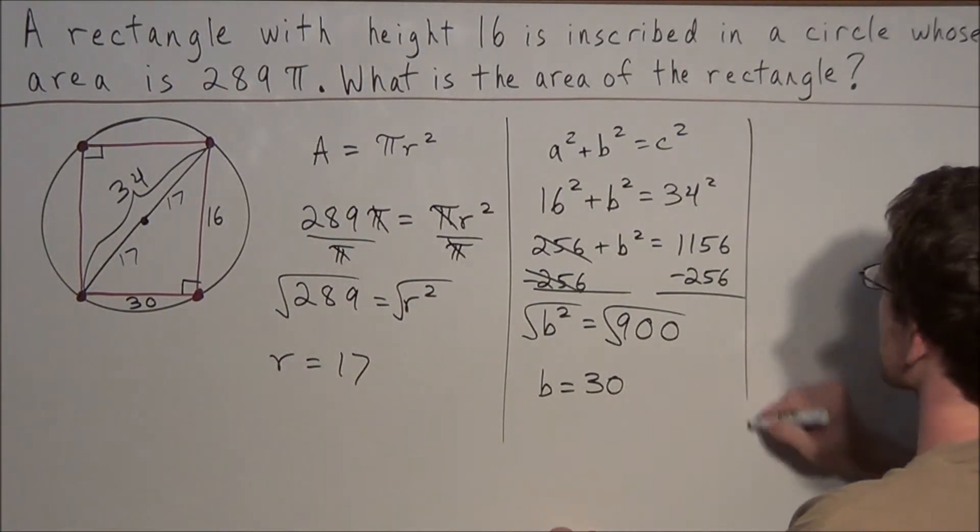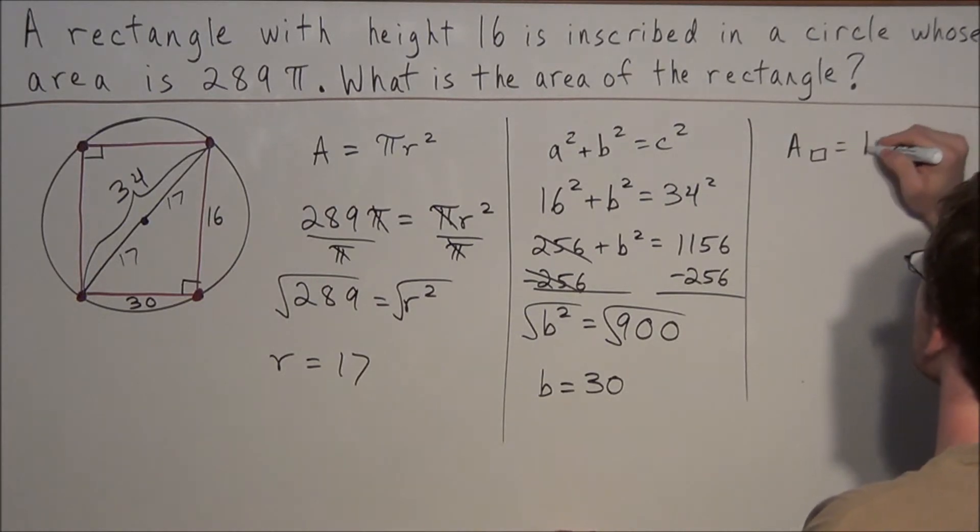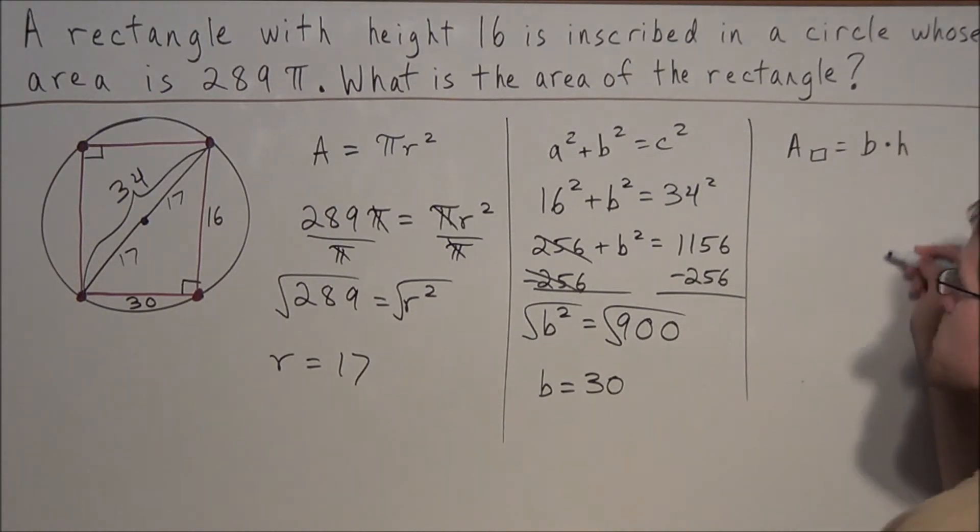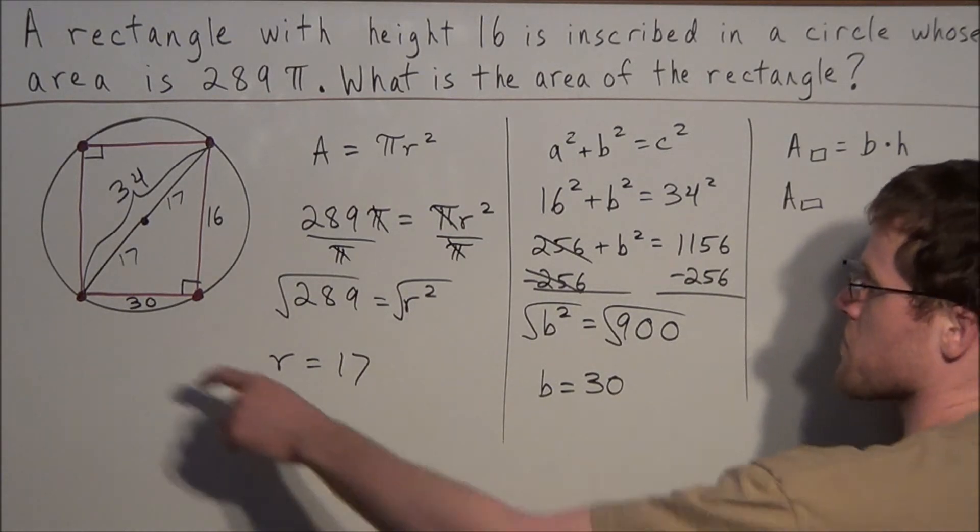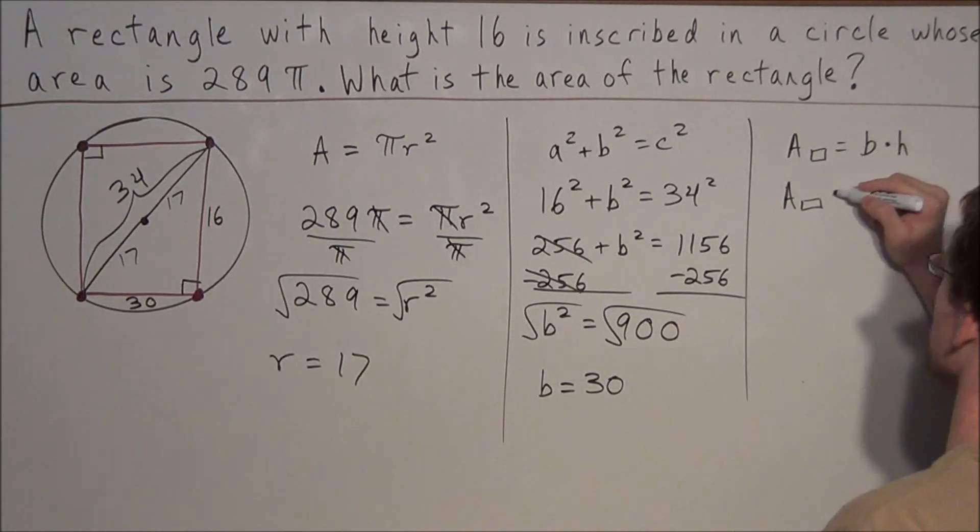To find the area of a rectangle, all we need to do is multiply base times height. And now we just found the base of this rectangle to be 30. So we have 30 times the height, which was given to us, 16. And now we evaluate. 30 times 16 is 480.